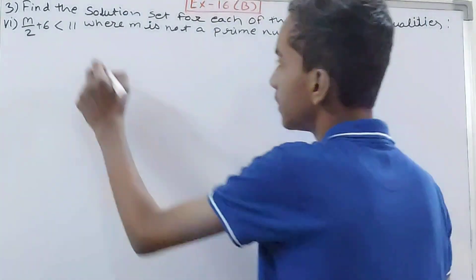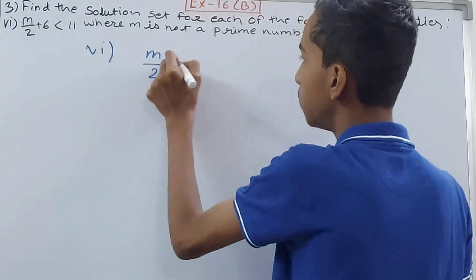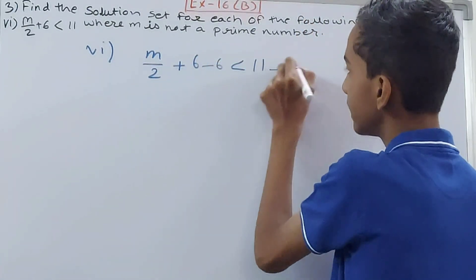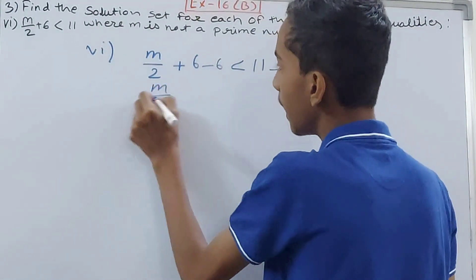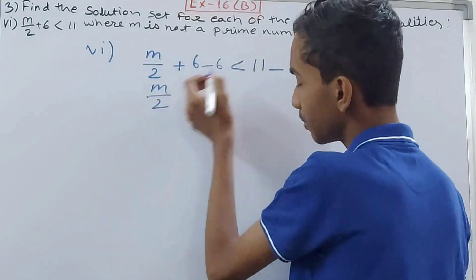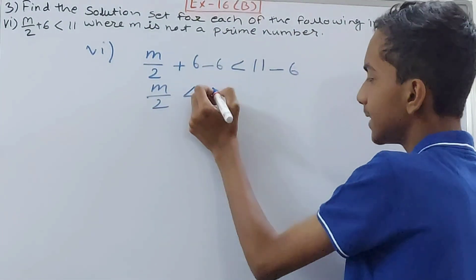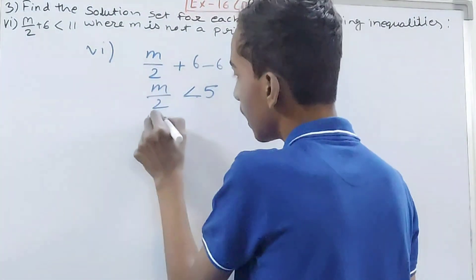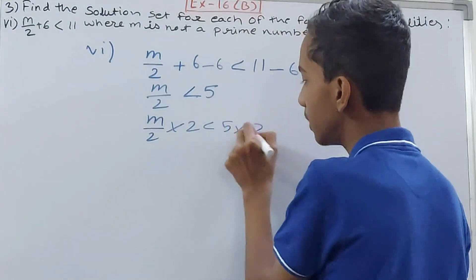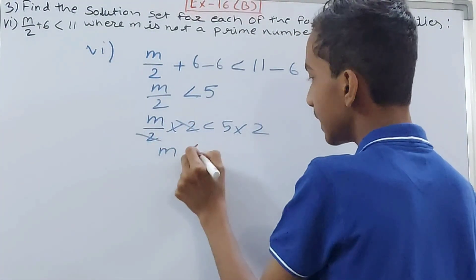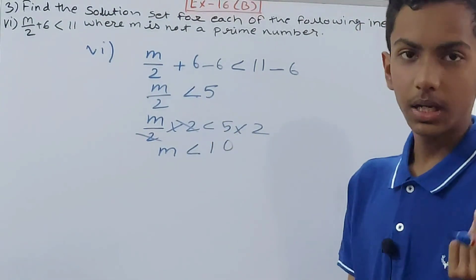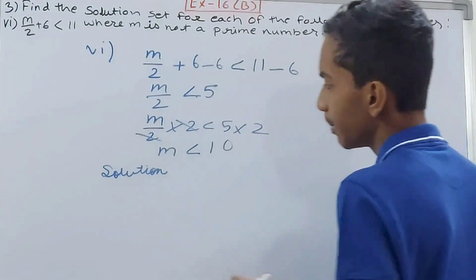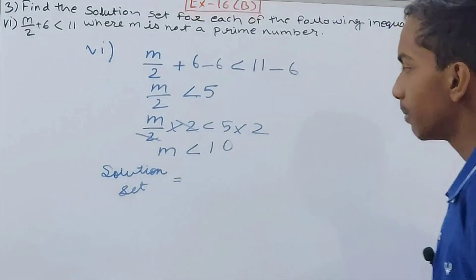The last inequality is m/2 + 6 < 11. I subtract 6 from both sides: plus 6 minus 6 cancels on the left, giving m/2 < 11 minus 6, which is 5. Then multiplying both sides by 2: the 2s cancel on the left, and 5 times 2 is 10. So m is less than 10.